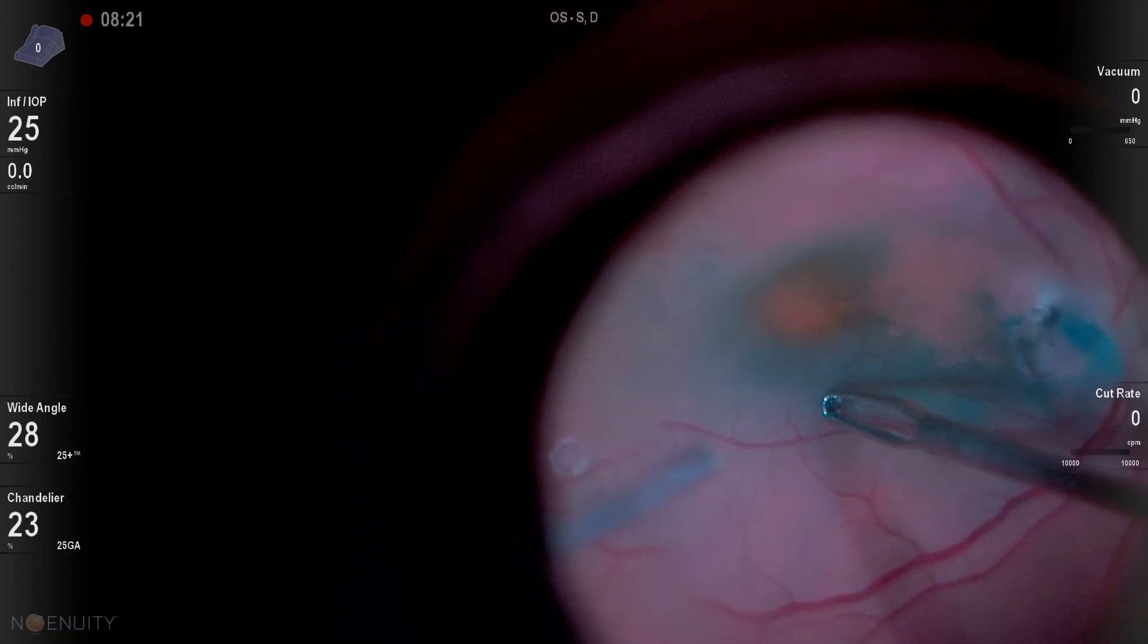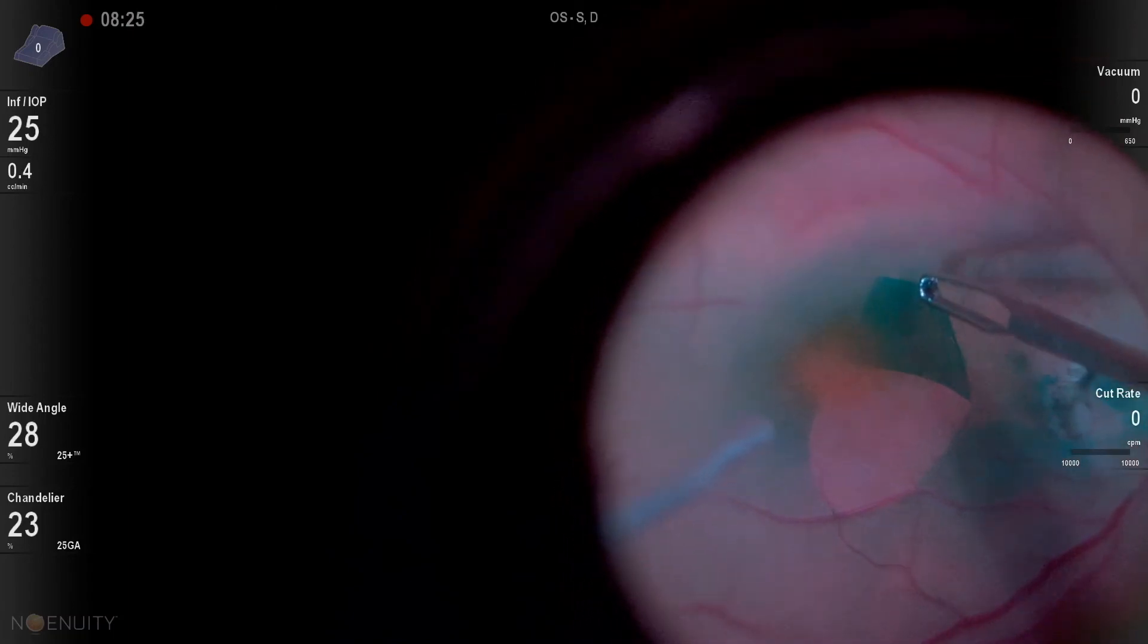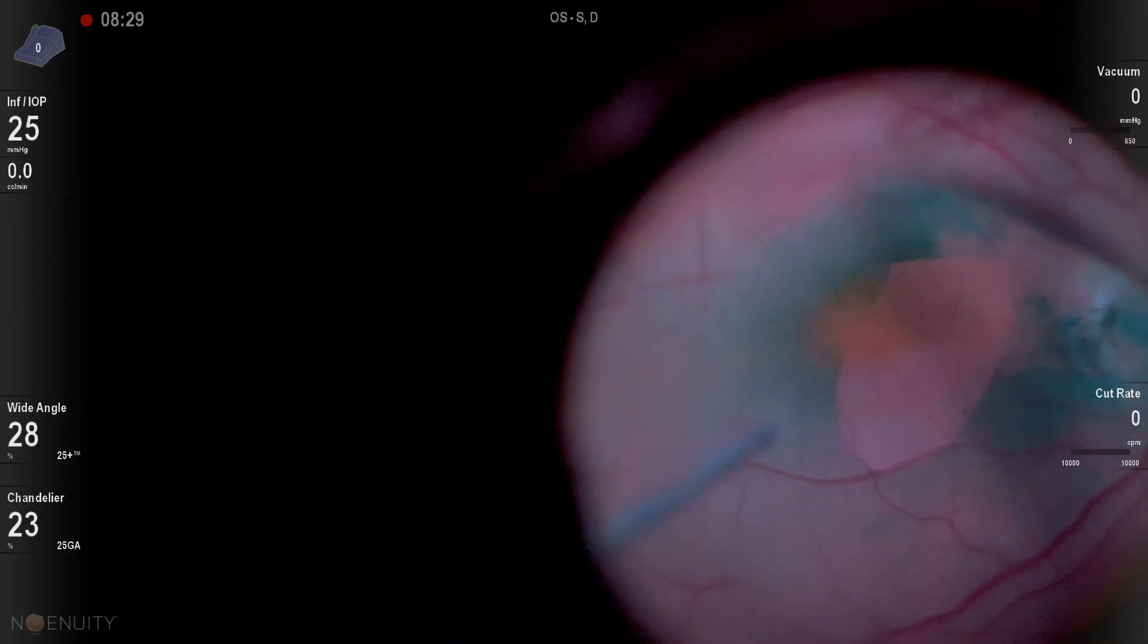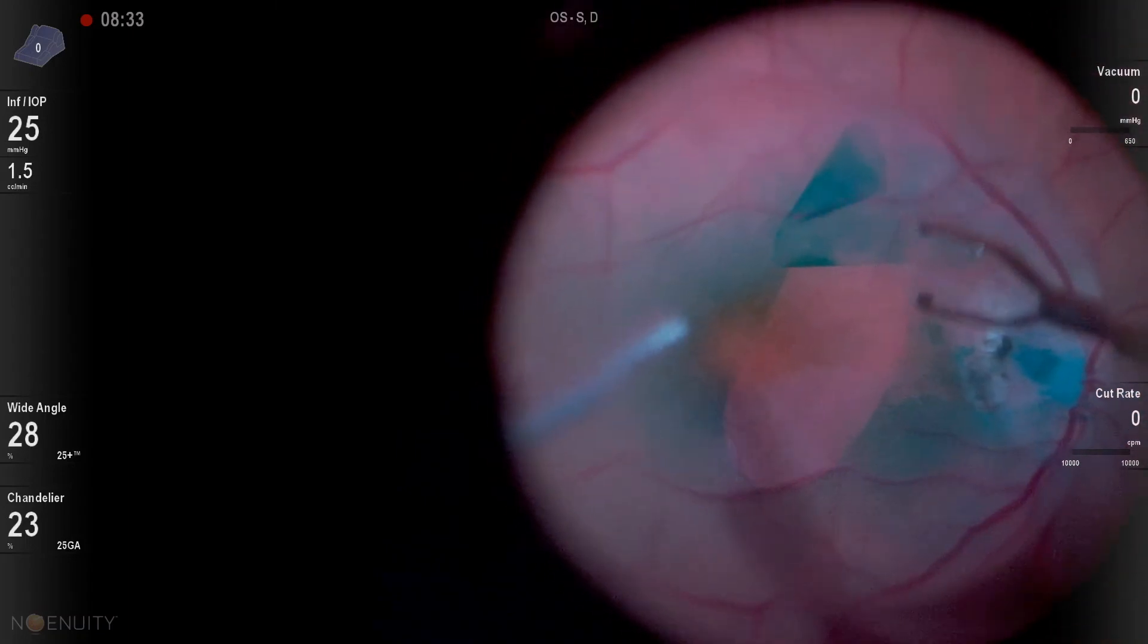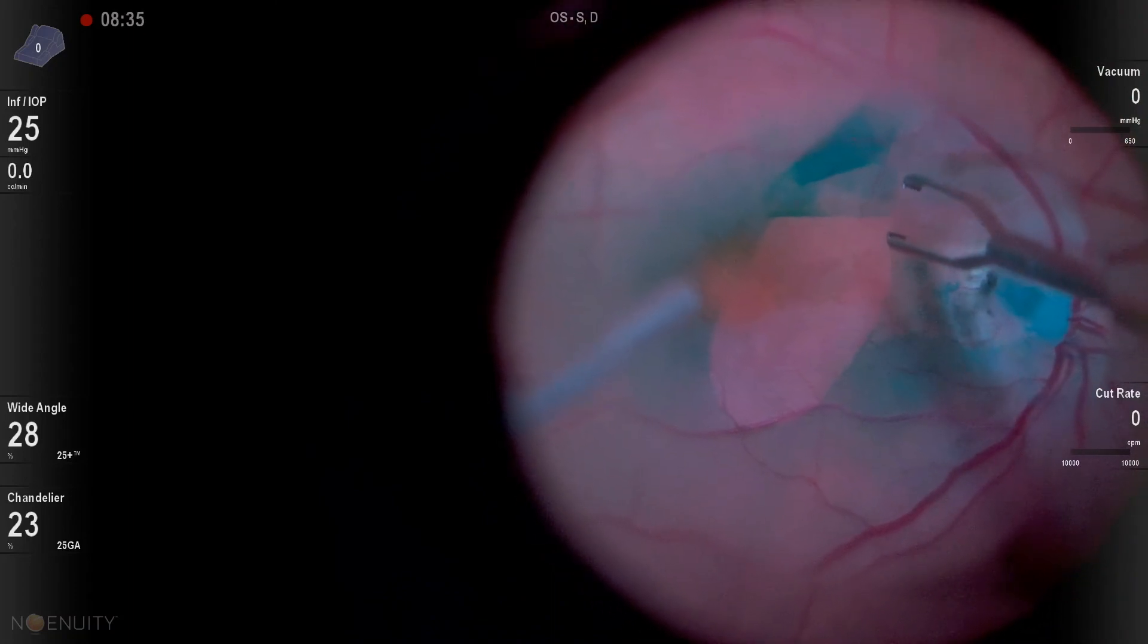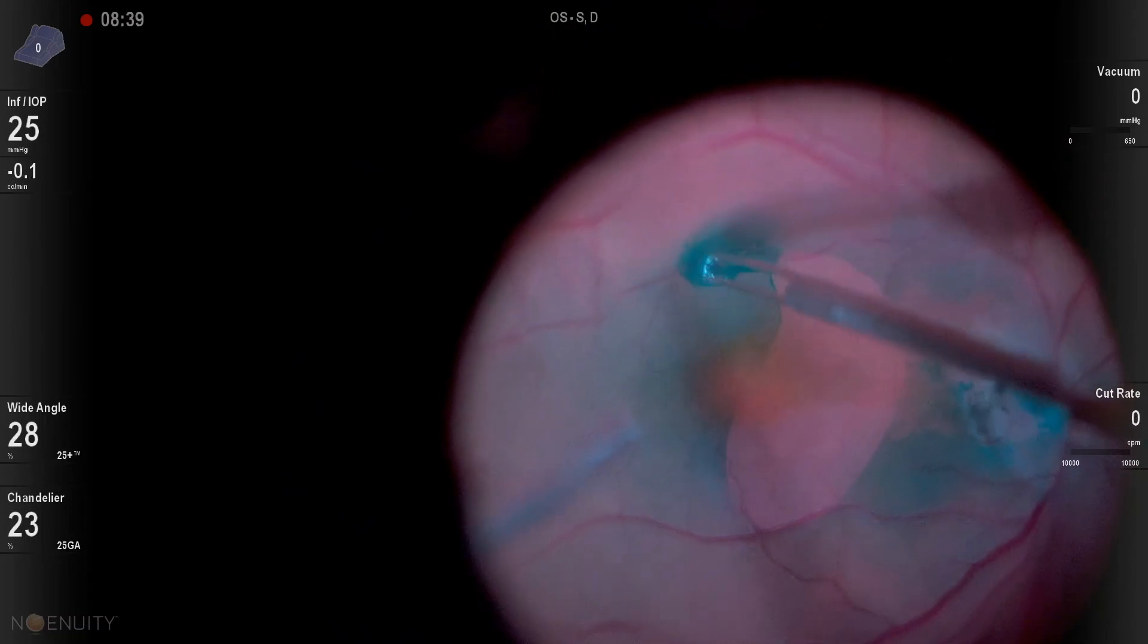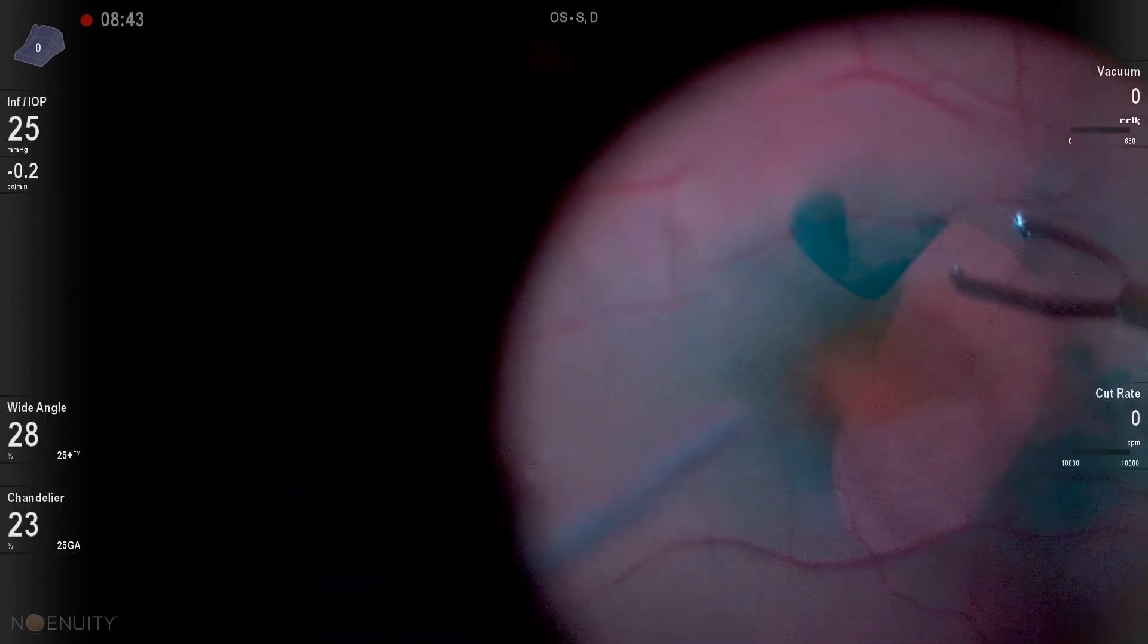So I went ahead and did my standard pinch and peel of the ILM. Here you can see peeling the ILM up and across. Interesting how the ILM really stained anomalously in the area of the fluid. You could actually see where the fluid had been or was by the fact that the ILM didn't stain as well in that area, which is very strange.